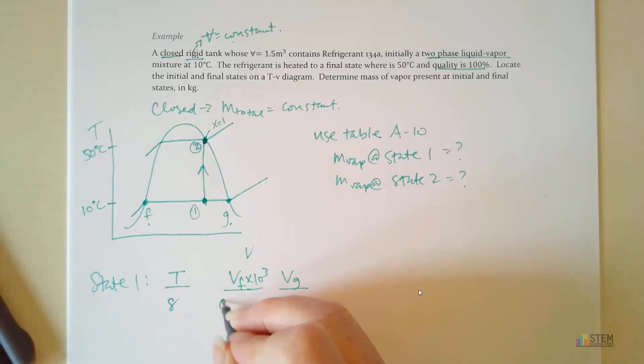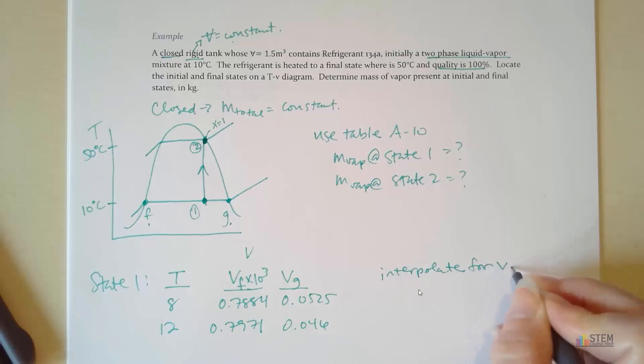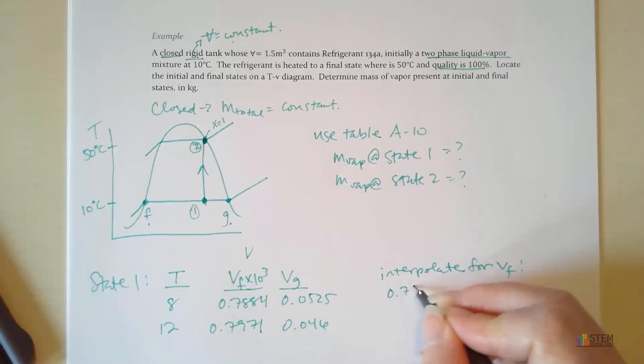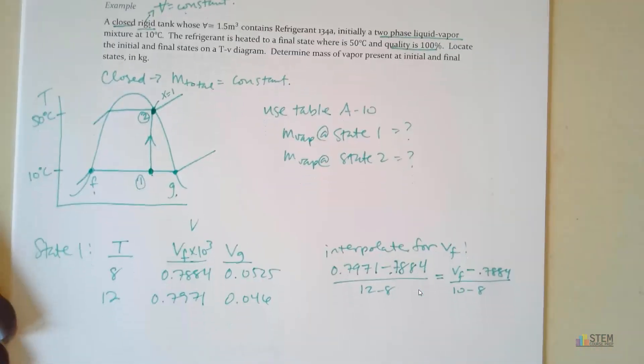So we're going to pull out the numbers here for VF and VG. And then we're going to have to interpolate. So we're going to have 8, and that's 0.7884. VG is 0.0525. Temperature 12, we got 0.7971, and we got 0.046 for VG. We need to interpolate for VF. So I have 0.7971 minus 0.7884 over 12 minus 8. That's going to equal VF minus 0.7884 over 10 minus 8. And now you can solve for VF.